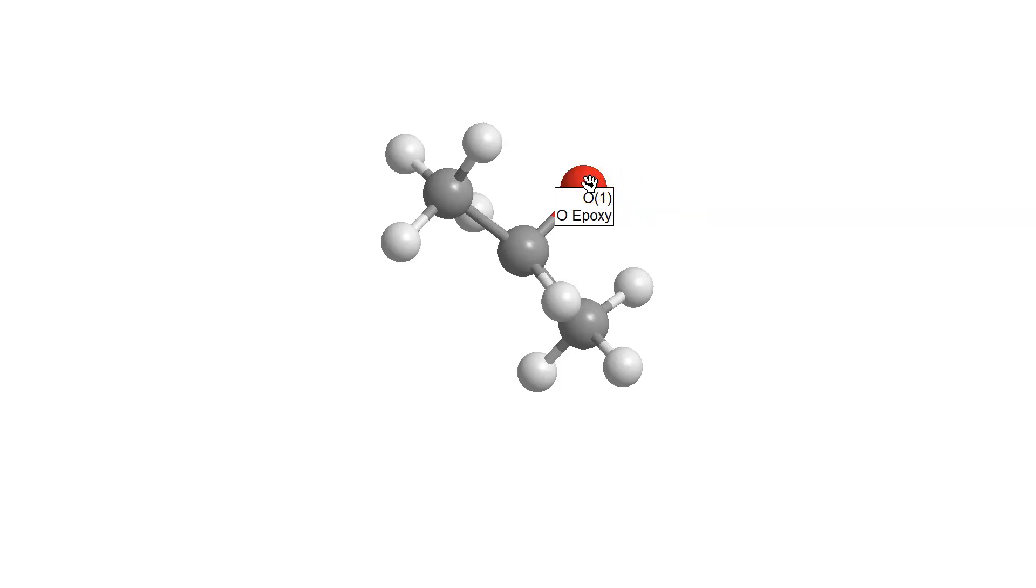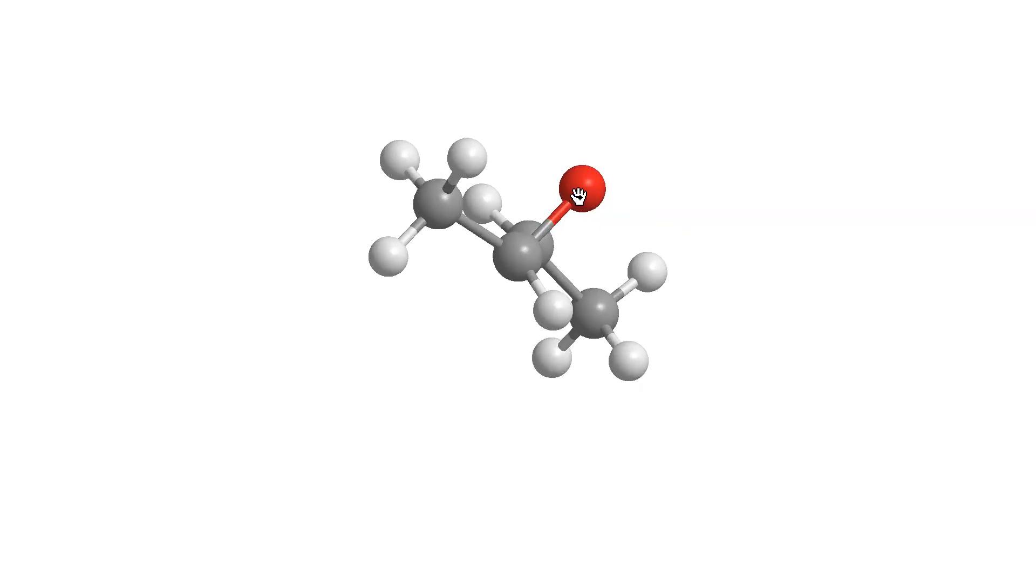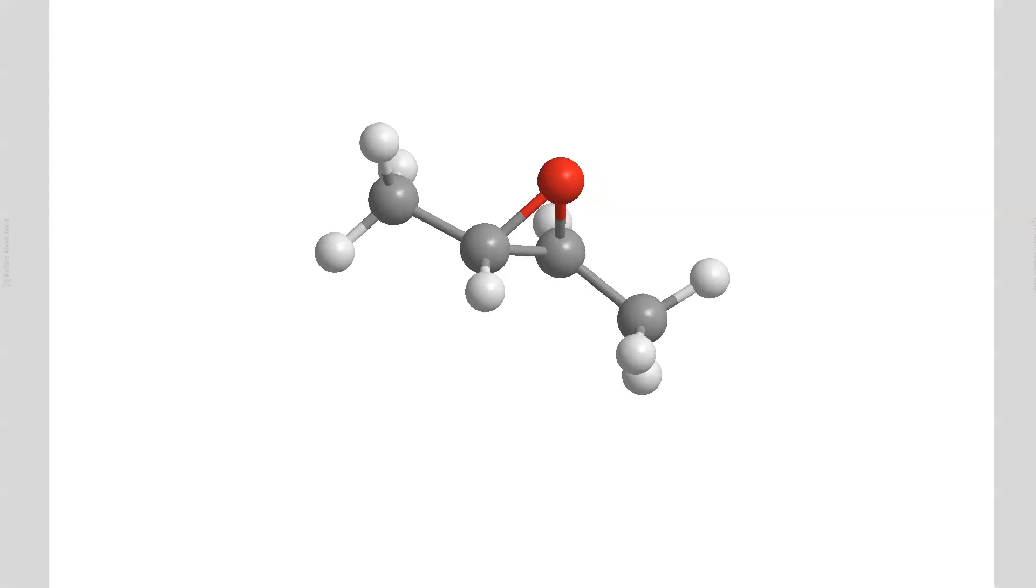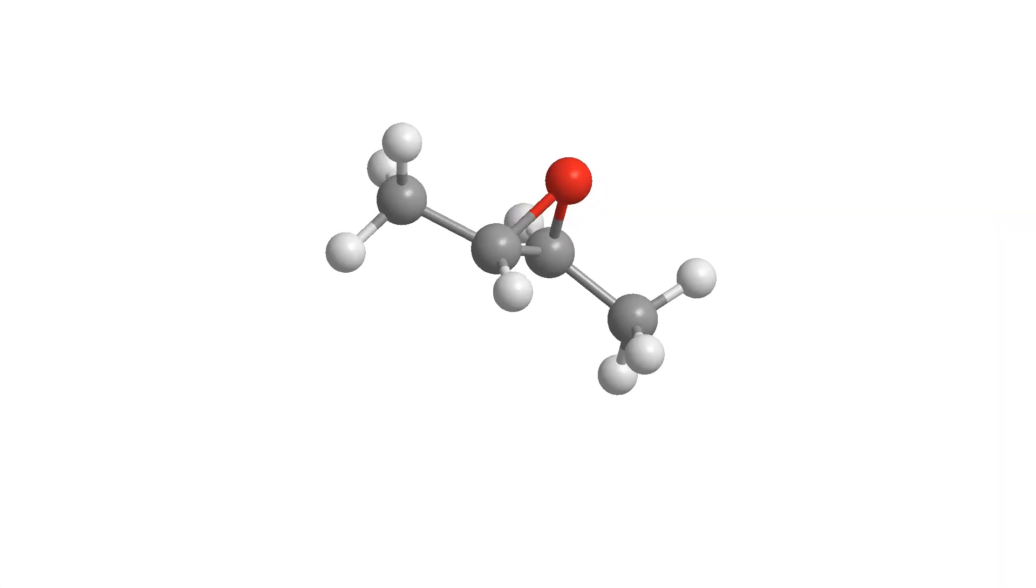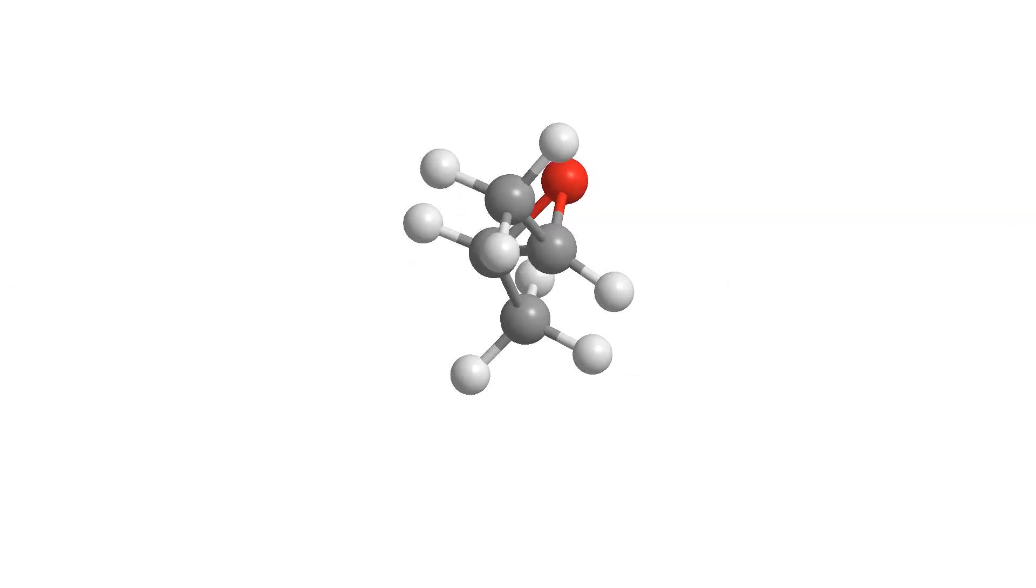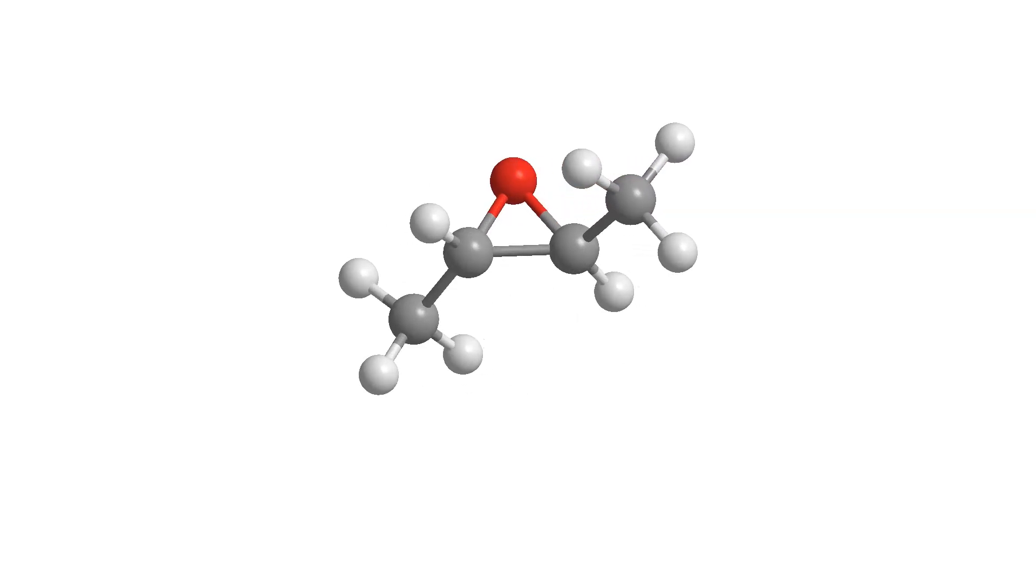Looking at this Newman projection style view, we can see that everything is eclipsed because the carbons are pretty much all coplanar. So everything is eclipsed here, which means the epoxide molecule possesses a huge amount of ring strain and it's so unstable that it's okay for the alkoxide to leave and you can get a ring opening reaction.